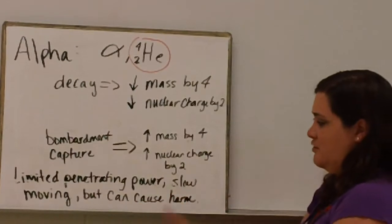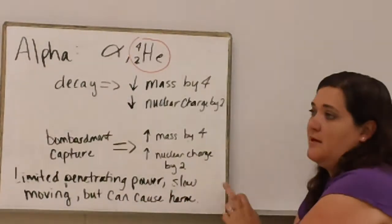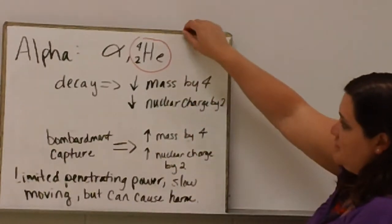Alpha particles have limited penetrating power because they are slow moving, but if they do get into your body they can cause a lot of harm because they are so slow moving.